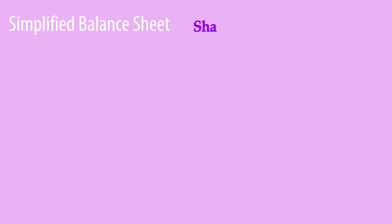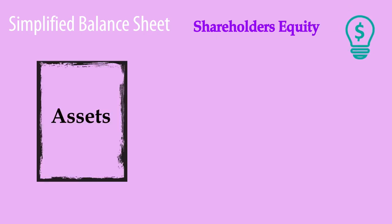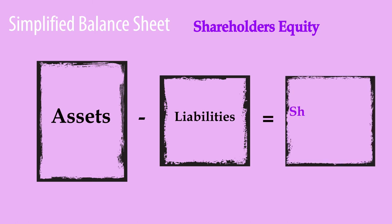Rearranging the accounting equation: assets minus liabilities equals shareholders' equity. Equity represents the sources of funds through either equity investments or retained earnings. Equity investments could be preferred stock, common stock, or treasury stocks.